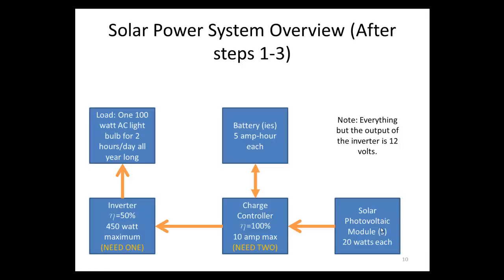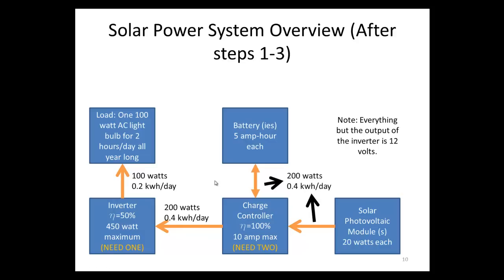To review what we've done so far: we found that we need one inverter and two charge controllers. Going to the load is 100 watts when it's on, and the energy needed is 0.2 kilowatt hours per day. When the light bulb is on, the inverter draws 200 watts from the charge controller, and the energy coming from the charge controller is 0.4 kilowatt hours per day. That means we need to supply 0.4 kilowatt hours per day — either from the battery or from the solar modules.